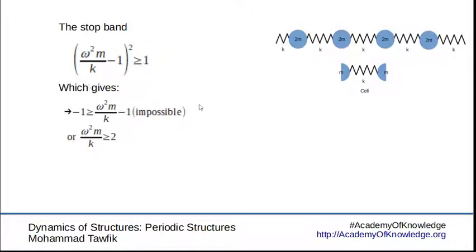Either it is less than minus one, which is impossible, because it just means that the omega squared m over k is less than zero. Omega squared can never be less than zero. m and k can never be less than zero. So this is an impossible condition or the other condition in which omega squared m over k is greater than two. This case will give us that omega squared is greater than two times k over m.